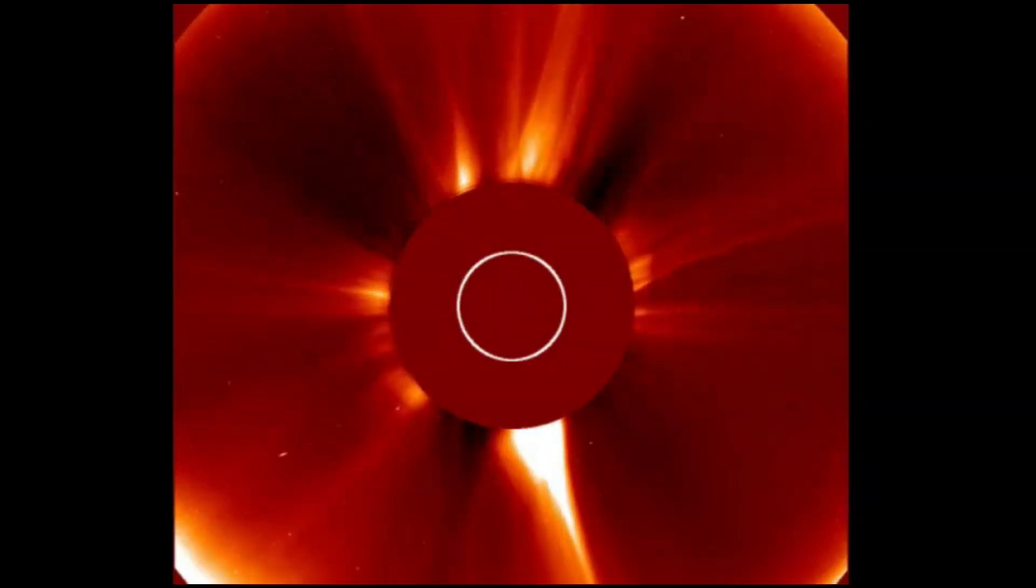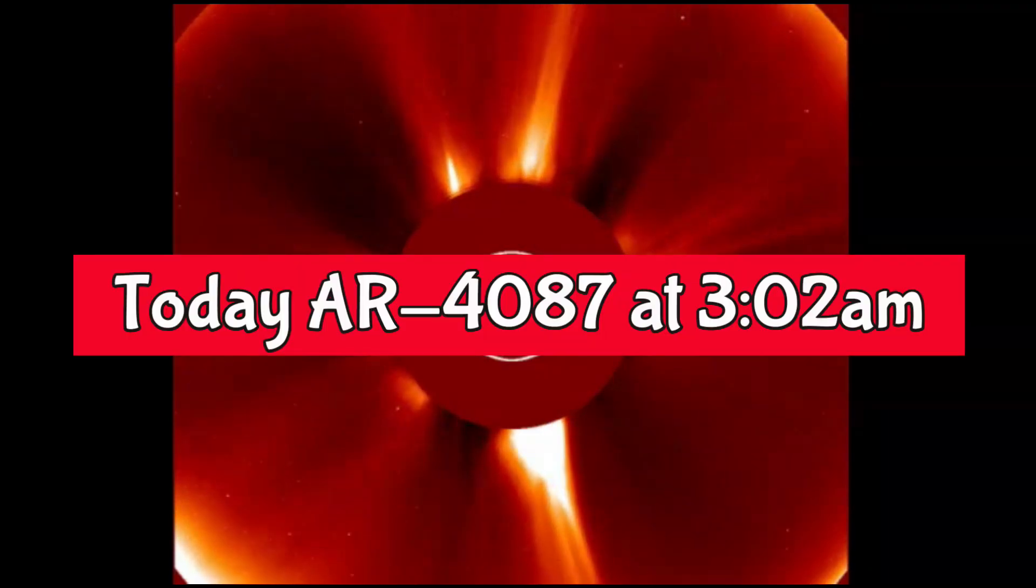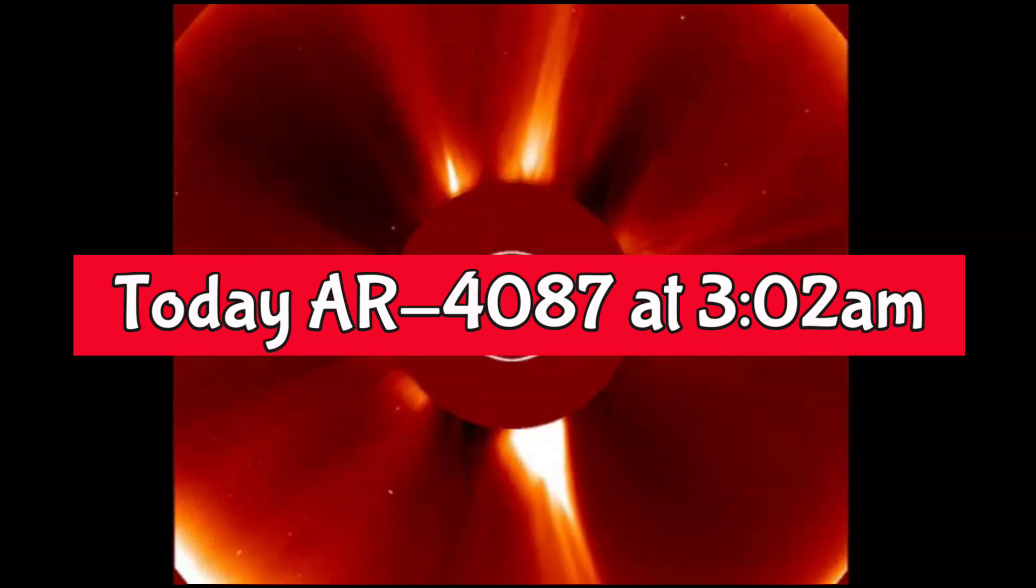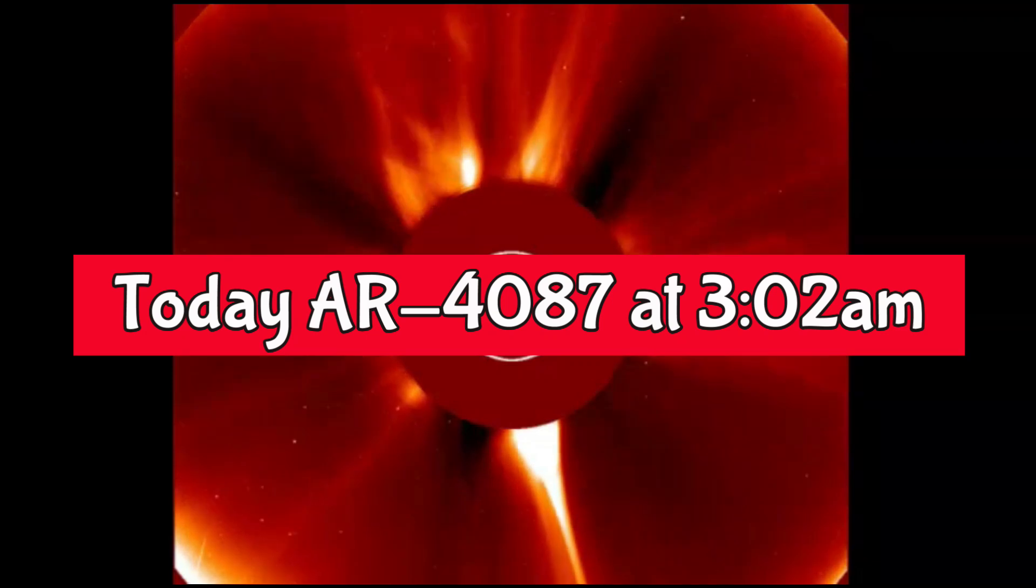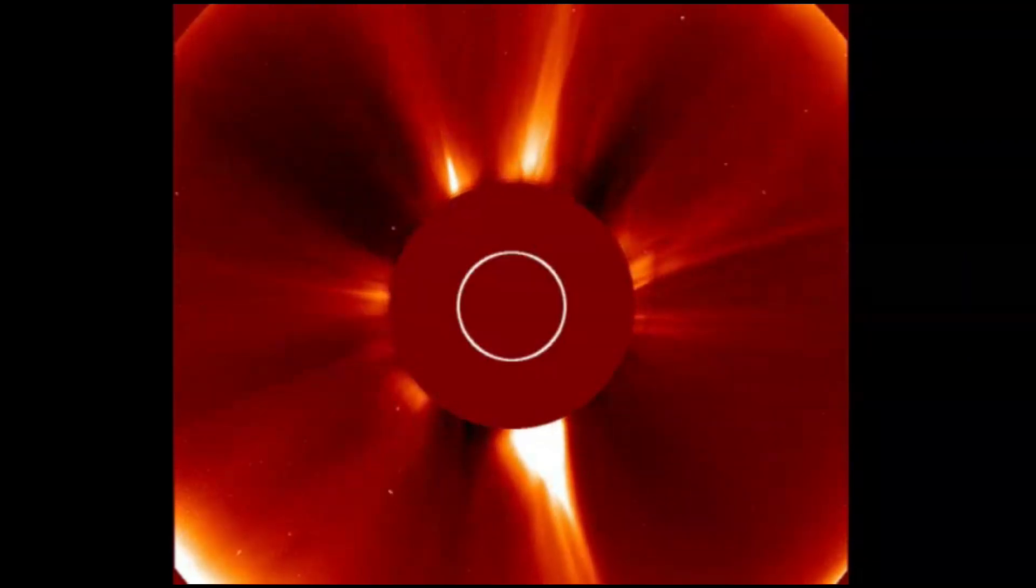So then we had another X flare at 8:04 Universal Time, or 3:02 a.m. this morning, and that one came from sunspot area AR 4087 as it rotated into view in the east.